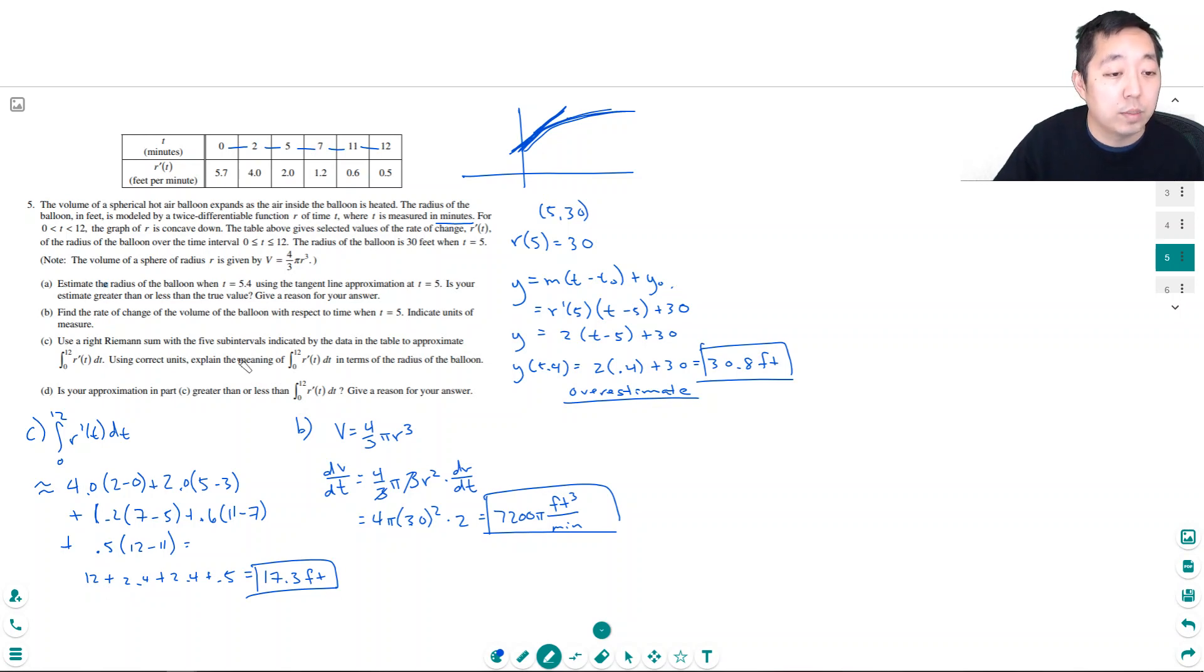That's the estimating. This integral would be the change in the radius. This means it grew 17.3 feet in 12 minutes. The radius grew. That's the meaning of part c.